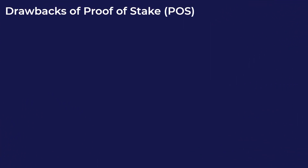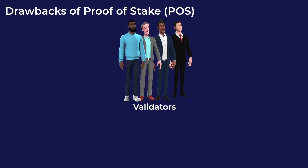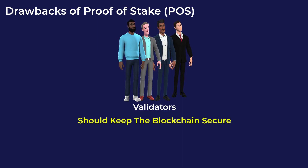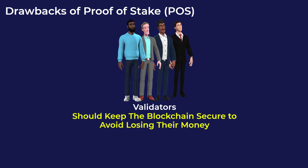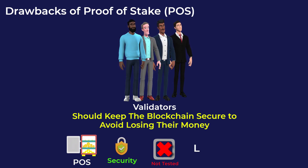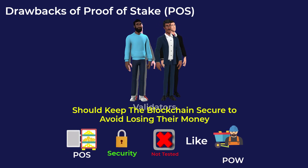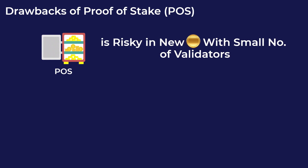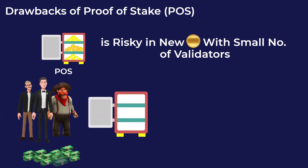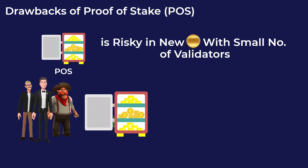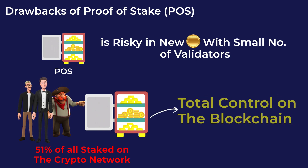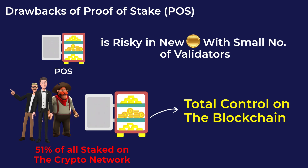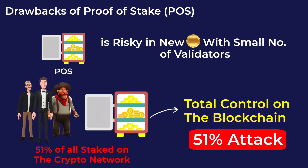What are the drawbacks of using proof of stake? First, although validators lock up their crypto into the network and should help keep the blockchain secure to avoid losing their money, the security of proof of stake has not been tested as extensively as proof of work. Also, using proof of stake is very risky in new cryptocurrencies with a small number of validators, as a group of people may stake an amount of crypto that equals 51% or more of all staked crypto on the network. If they succeed in doing that, they will get total control over the blockchain. This is known as the 51% attack, and it is very unlikely to happen to a large popular crypto like Ethereum.